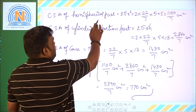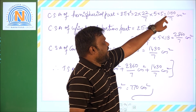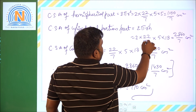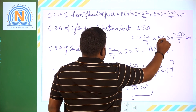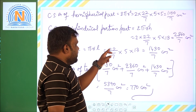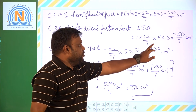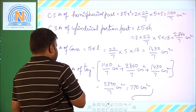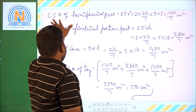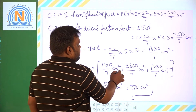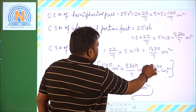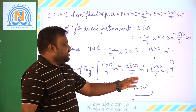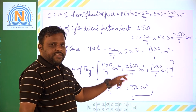CSA of hemispherical part = 2 × (22/7) × 5 × 5 = 1100/7 square centimeters. CSA of cylindrical part = 2 × (22/7) × 5 × 13 = 2860/7 square centimeters. CSA of cone = (22/7) × 5 × 13 = 1430/7 square centimeters. Total surface area of the toy = 1100/7 + 2860/7 + 1430/7 = 5390/7 = 770 cm².